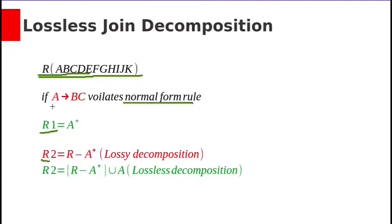R1 will have set of attributes which can be derived by using this attribute A. Suppose if we have another functional dependency C determines D. Then this R1 will have A, B, C and D also because D can be determined by using C. So R1 will have all this set of attributes.